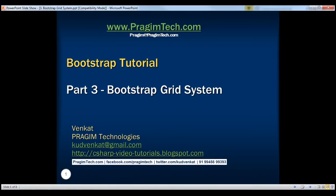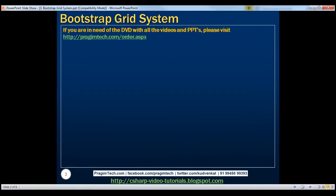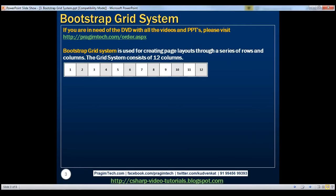This is part 3 of the Bootstrap tutorial. In this video, we'll discuss how to create page layouts using the Bootstrap grid system. One of the very important concepts to understand in Bootstrap is its grid system, which is used for creating page layouts through a series of rows and columns. The grid system consists of 12 columns and is so flexible that you can create any page layout that you want.